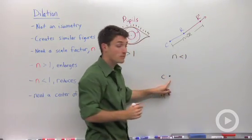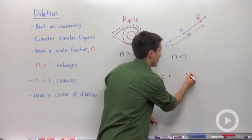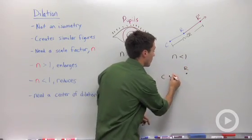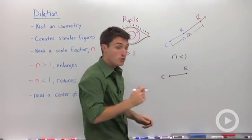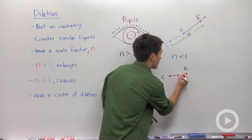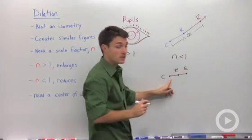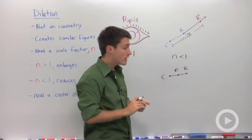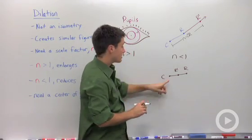Let's say we had n less than 1. If we had our center of dilation here and some point r, if n is less than 1, we know that our new point r prime will be somewhere on this line segment, but it will be closer to your center of dilation.